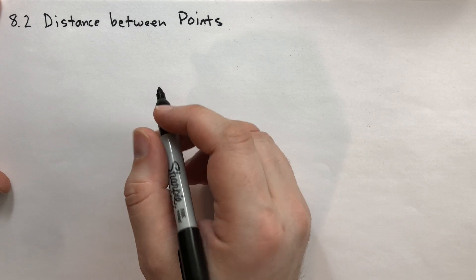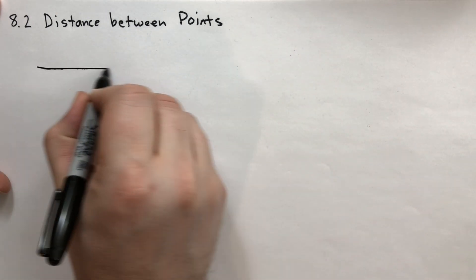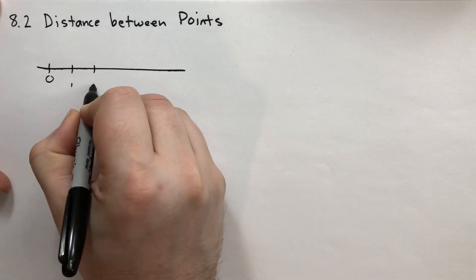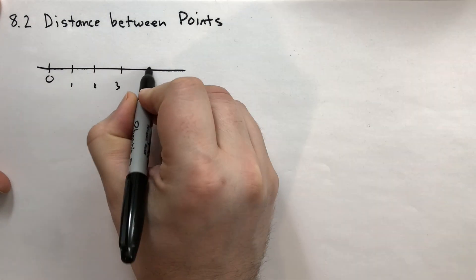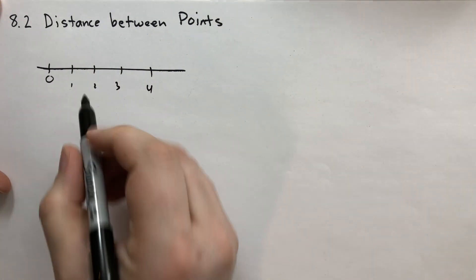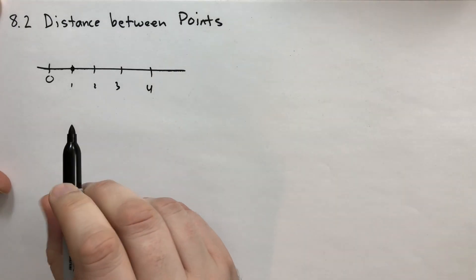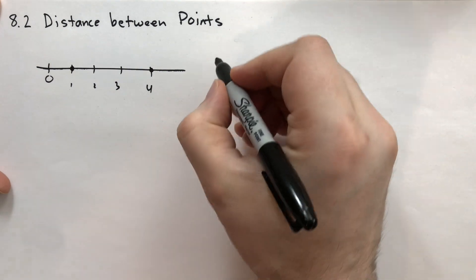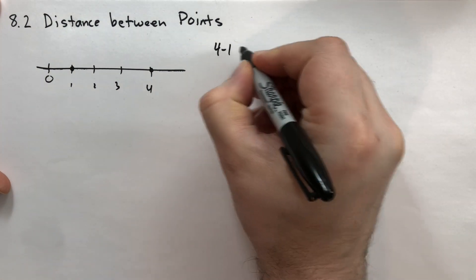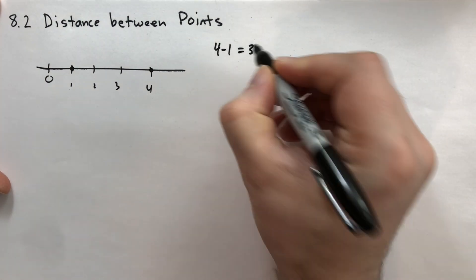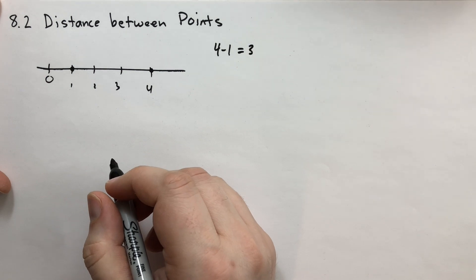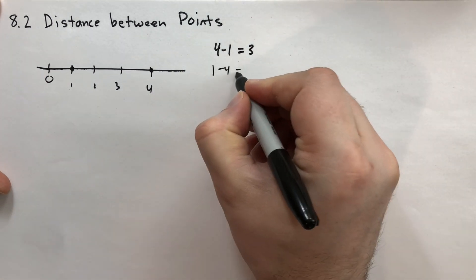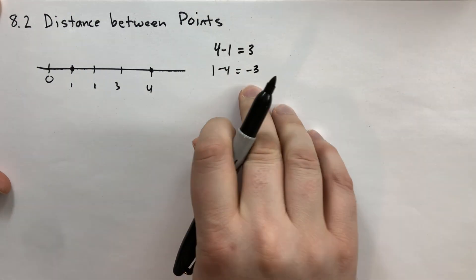First we're going to talk about the distance between two points on a line. In the book he has points at zero, one, two, three, four. We have a point at one and a point at four, and we want to calculate the distance. You can just do basic subtraction: four minus one is equal to three, so the distance is three. If we did one minus four we get minus three — but you can't have negative distances.